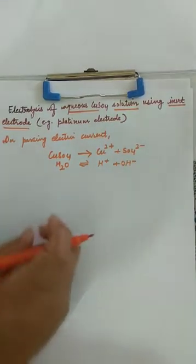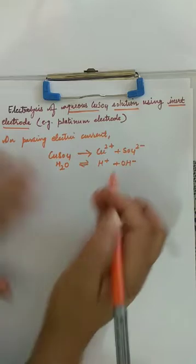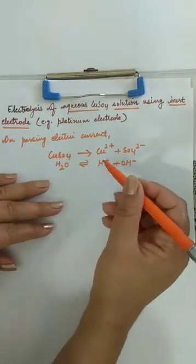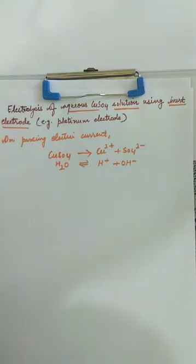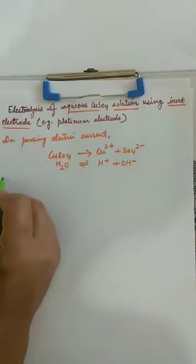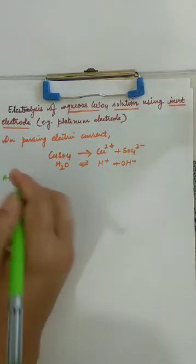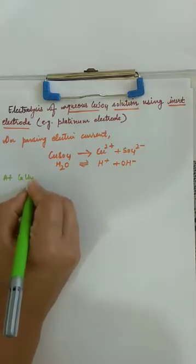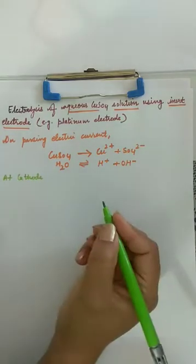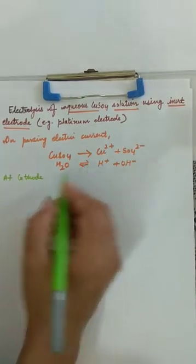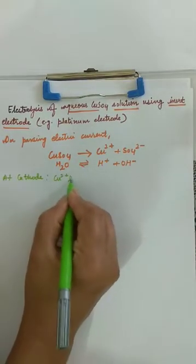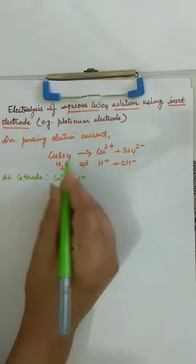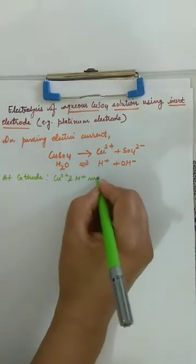As we know, the positive ions will move to cathode and negative ions will move to anode. So at cathode, both Cu2+ and H+ will migrate to cathode.